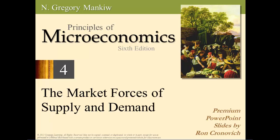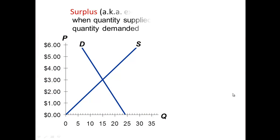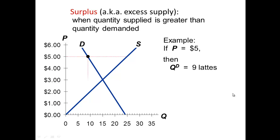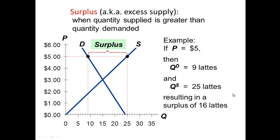This lecture is going to talk about what happens when we are in disequilibrium, and also what we will do when we are in disequilibrium to get back to equilibrium. Remember that we stated in the last lecture that the point at which quantity supplied and quantity demanded are equal is called the equilibrium point, and at that point the equilibrium price was $3 and the equilibrium quantity is 15.